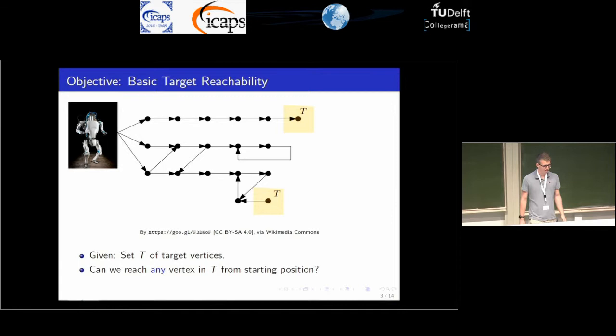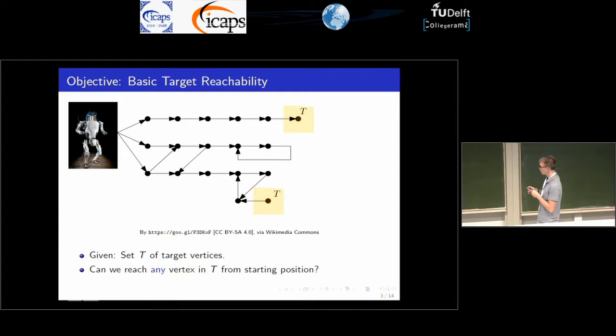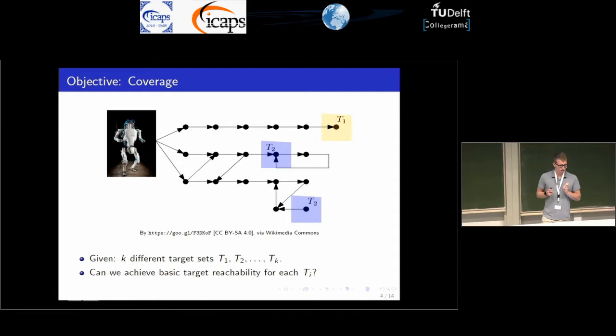The first objective is basic target reachability. You're given a set of vertices and you want to know if you can reach one of them from the starting position. In this case it's obviously yes, because you can just take the uppermost path and the robot is fine.